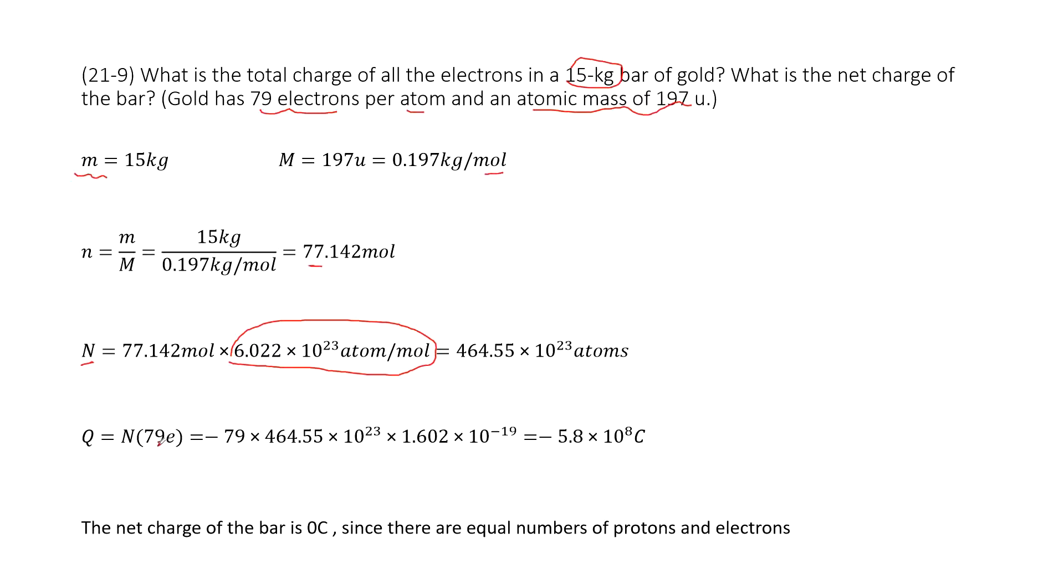It becomes 79 times N electrons. And then for each electron, it has a fundamental charge e, right? E is also a constant. Then you get the answer. We are done.